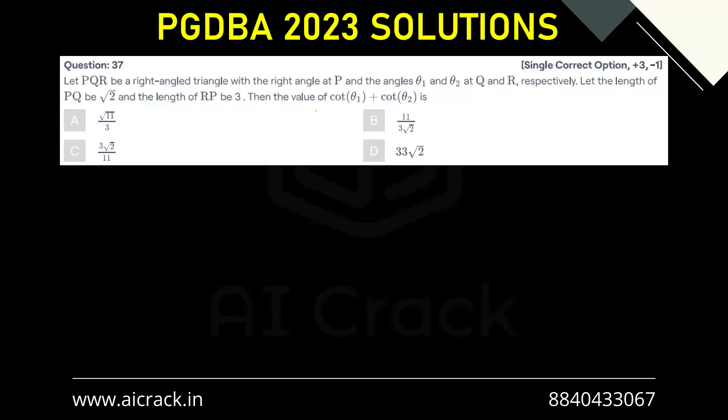So this was the easiest question of last year. We have a right-angle triangle with the right angle at P. Let's say this is Q and this is R.